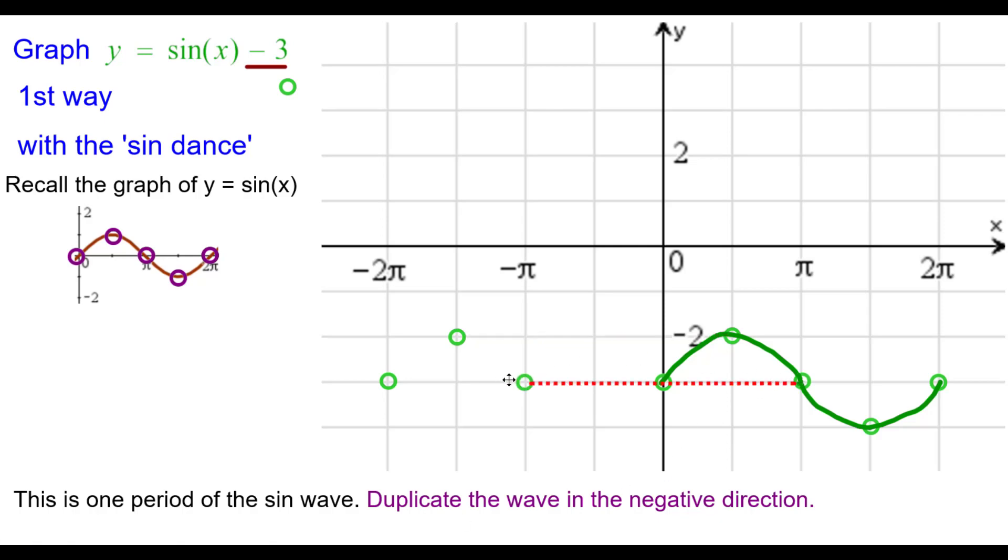Pi, negative 3 backs up to negative pi, negative 3. And 3 pi over 2, negative 3 backs up to negative pi over 2, negative 3. Again, we connect the points as a sine wave, a frown or a concave down curve, and a smile and a concave up curve.